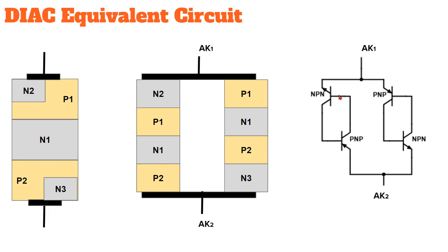The collector of this PNP transistor is connected to the base of this NPN transistor. Similarly, the base of this PNP transistor is connected to the collector of this NPN transistor. This forms one Shockley diode equivalent circuit, and the other set of transistors forms another Shockley diode equivalent circuit. That is why I emphasize that you should first watch my lecture on the Shockley diode.